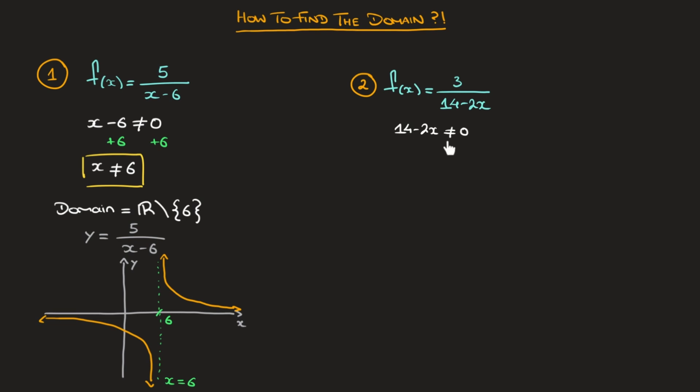Now, I solve this non-equation in the same way that I would solve an equation. And for that, I'll start by getting rid of this 14 on the left-hand side. And I do so by subtracting 14 from both sides. That leads us to negative 2x not equal to negative 14. And now to get rid of this negative 2 which is multiplying x, I divide both sides by negative 2. And so that becomes x not equal to negative 14 over negative 2. In other words, x not equal to 7.